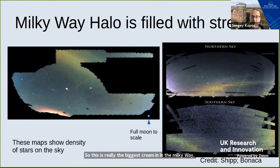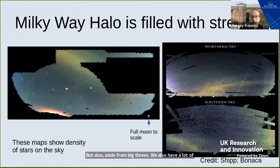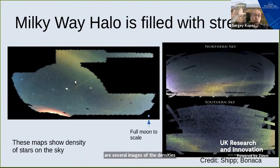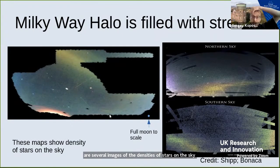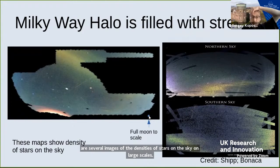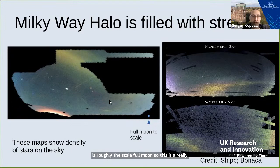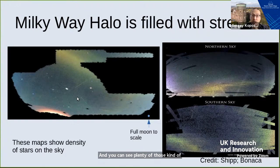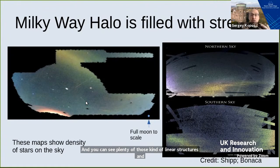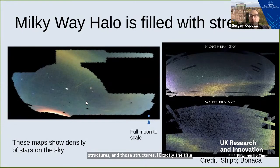Aside from big streams, we also have a lot of very thin streams. What I show here are several images of the densities of stars on the sky on large scales. This circle is roughly the scale of a full moon, so these are really large maps — imagine going outside and looking at the whole sky. You can see plenty of linear structures, and those linear structures are exactly the tidal tails — tidal streams formed from disrupted globular clusters and dwarf galaxies.